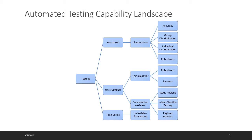Most AI literature papers are for image testing and talk mostly about robustness, whereas here we address all other properties. For today, we are going to talk about only the structured data properties: accuracy, group discrimination, individual discrimination, and robustness, and how we can automatically generate test cases to test those properties. For the Q&A session, we can discuss text classifier testing and time series testing as well.